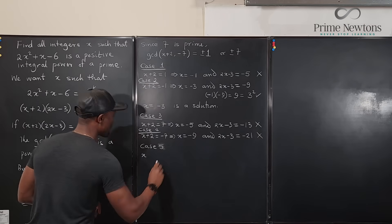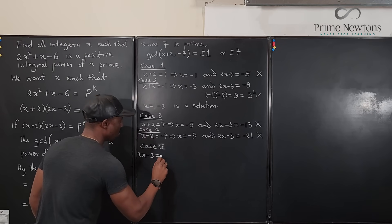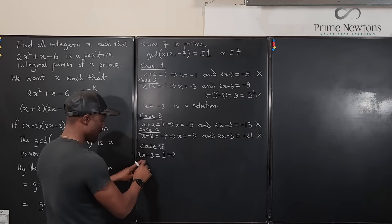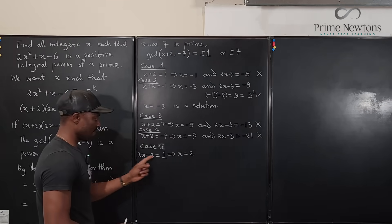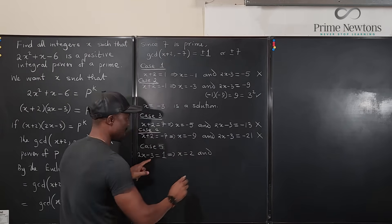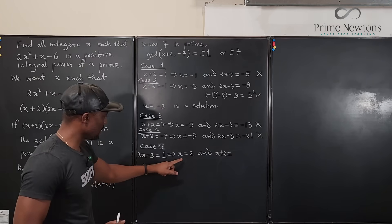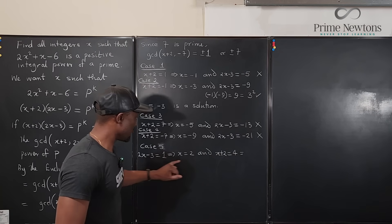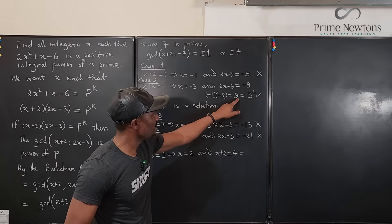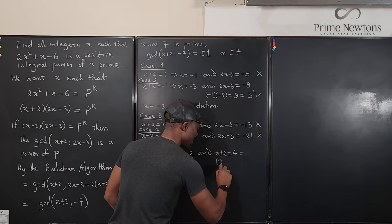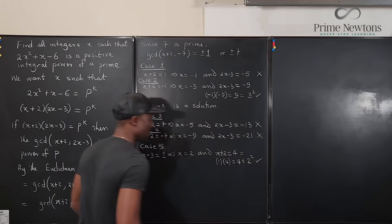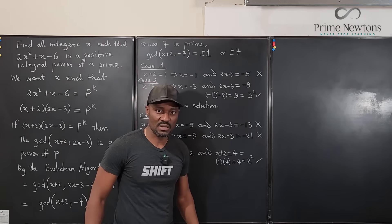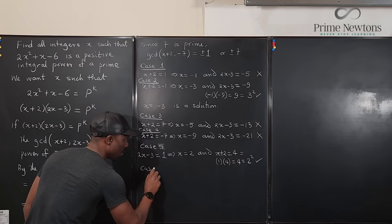Case 5: 2x−3 = 1, which implies x = 2. Then x+2 = 4 = 2². So we have 1 × 4 = 4 = 2², which meets our condition. Let's verify: plugging x = 2 into x²+x−6 gives 4+2−6 = 0... actually 2×4 = 8, 8+2 = 10, 10−6 = 4 = 2². Confirmed. So x = 2 is a solution.